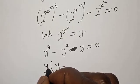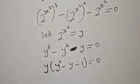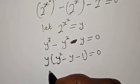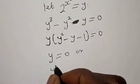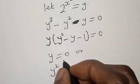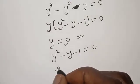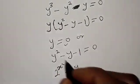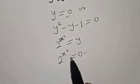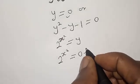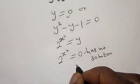Let's factor y out. We have y into y squared minus y minus 1 is equal to 0. From the factor y equals 0, we substitute back: 2 raised to power s squared is equal to 0. We know that 2 raised to power s squared cannot equal 0, so we reject this — it has no solution.